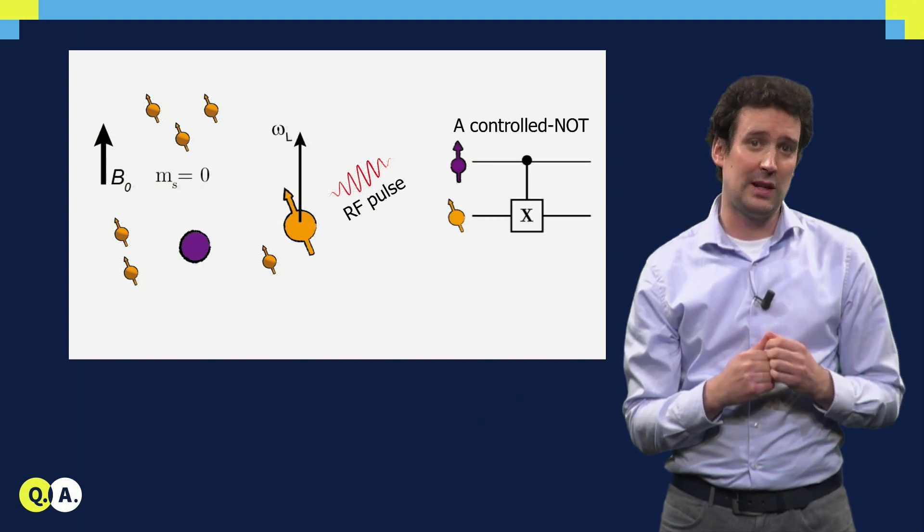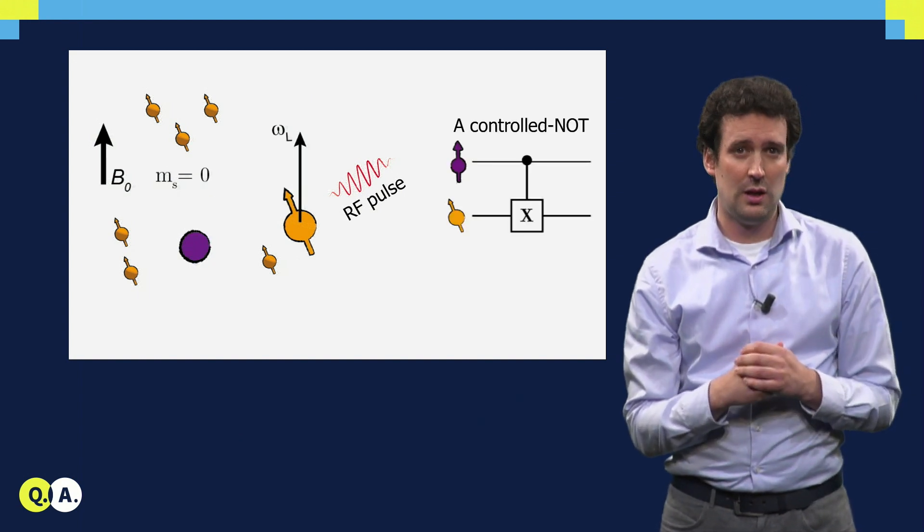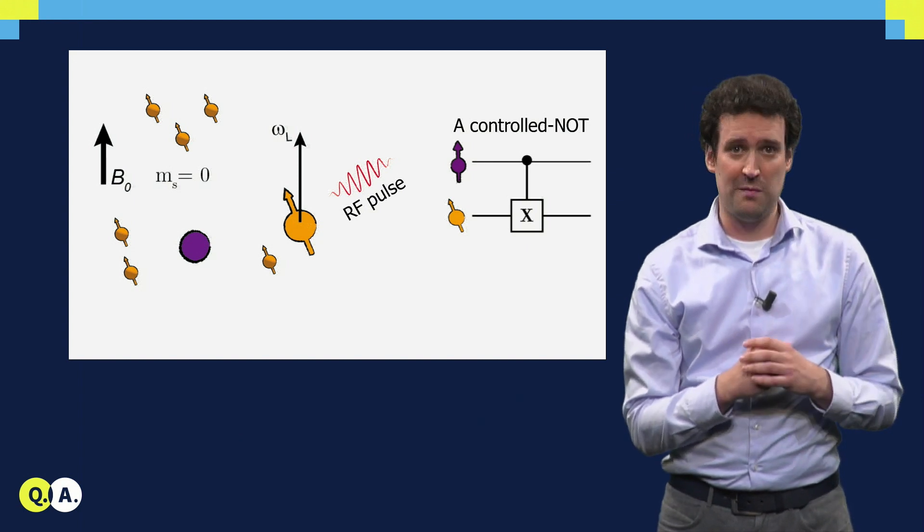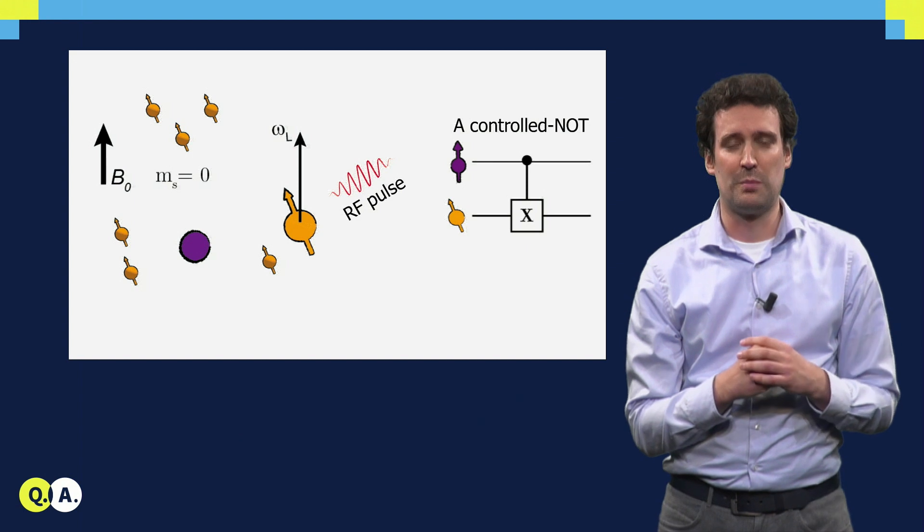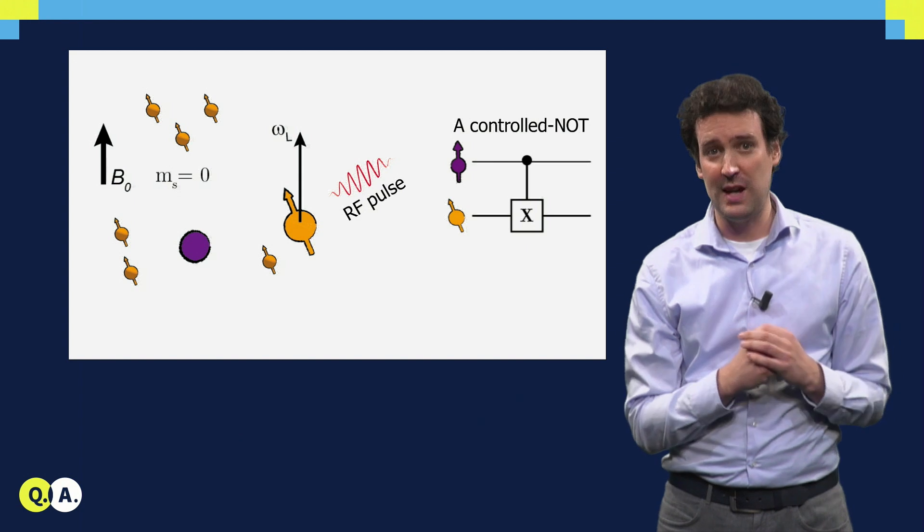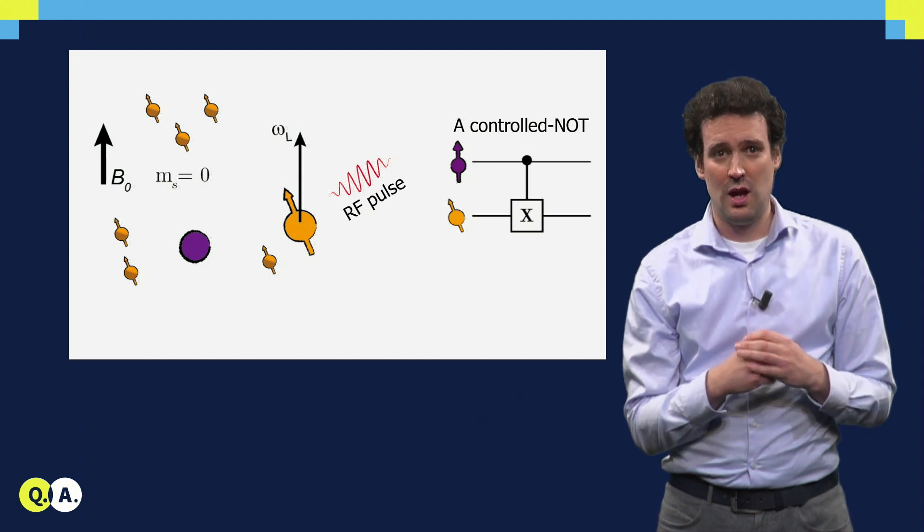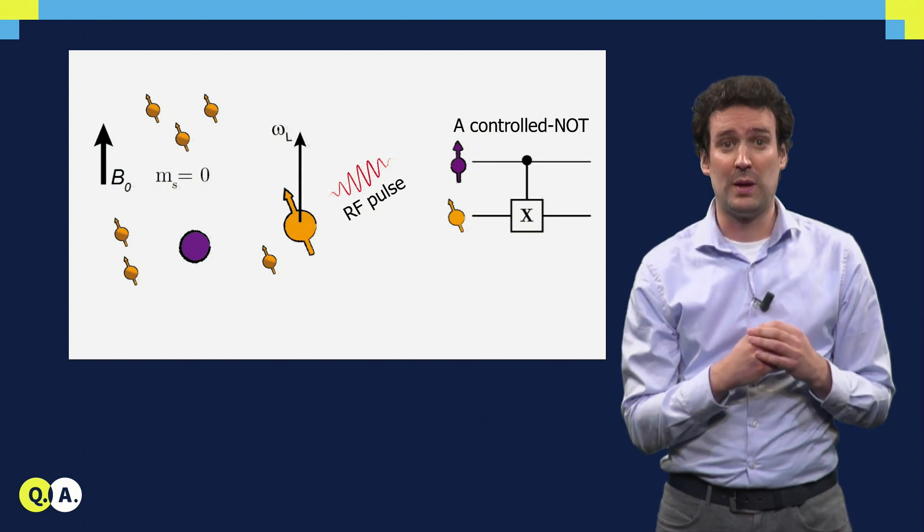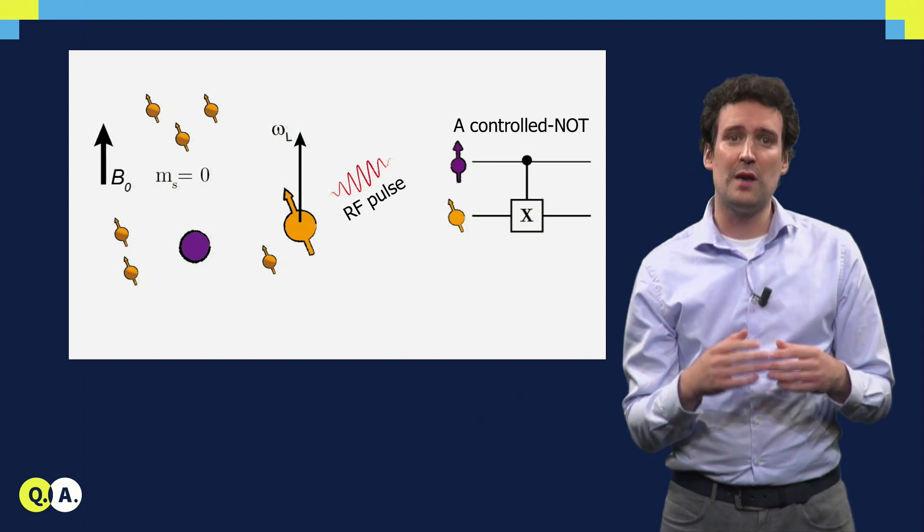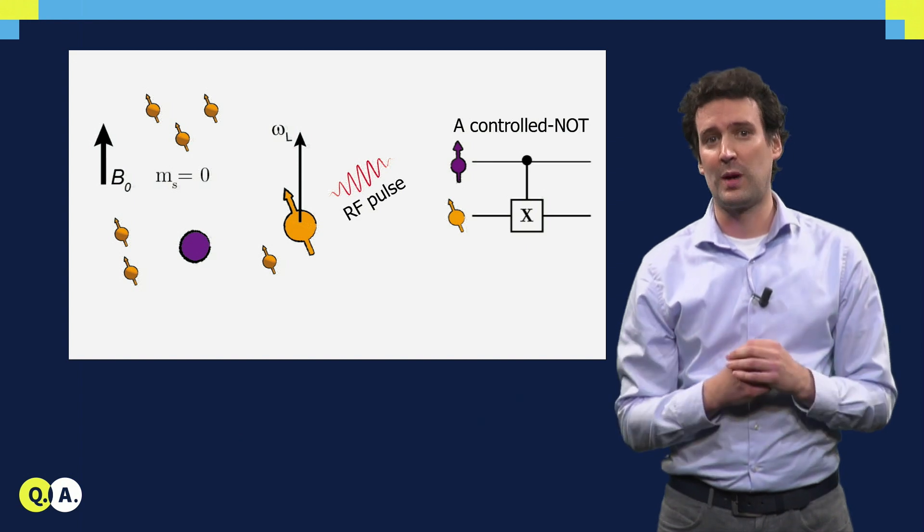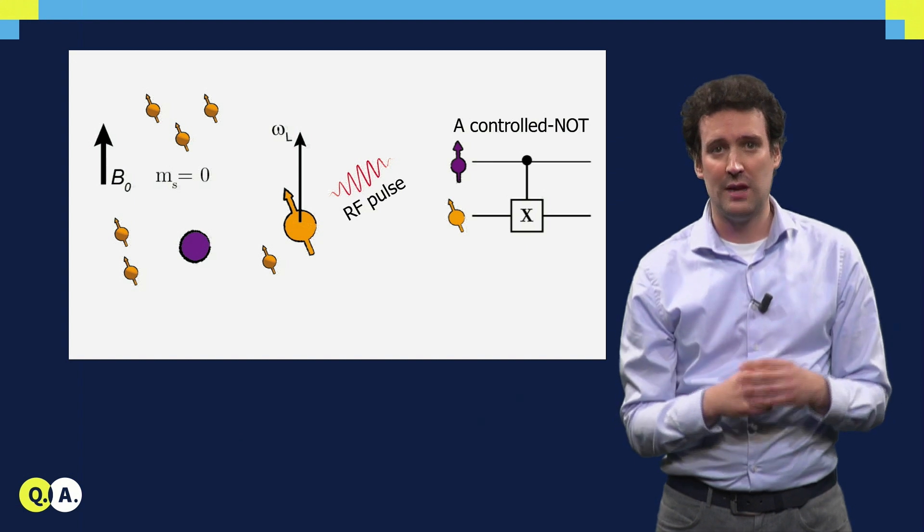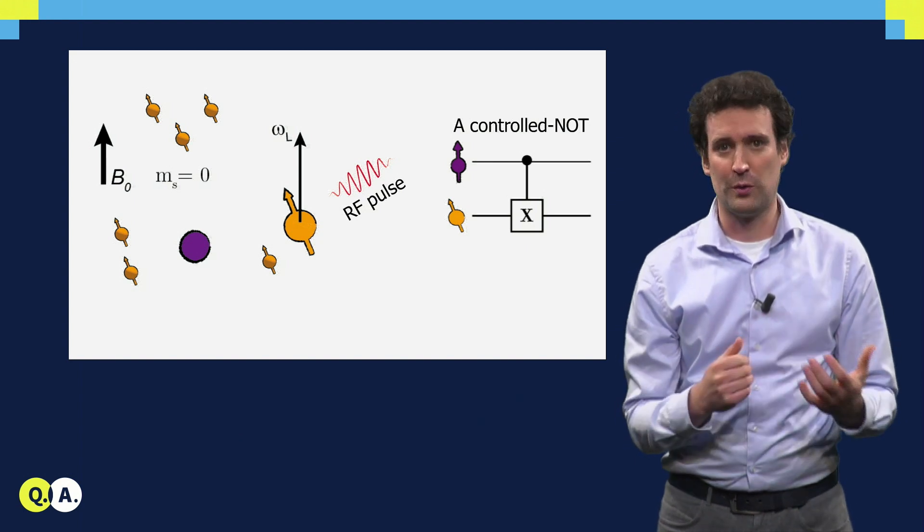Moreover, if we now flip the electron to its zero state, it does not create a magnetic field. So now the same RF pulse will have no effect on the nuclear spin. The evolution of the nuclear spin thus depends on the state of the electron spin. It rotates if the electron spin is in state 1, but it does not rotate for state 0. So this means we have constructed a controlled quantum gate between the electron and the nuclear spin, a CNOT, and that is exactly what we need for quantum computations.